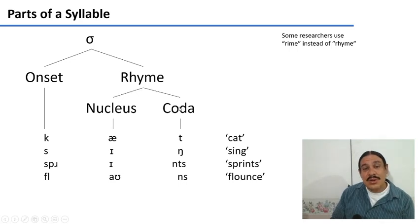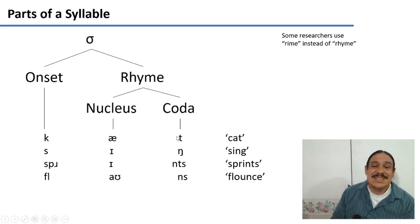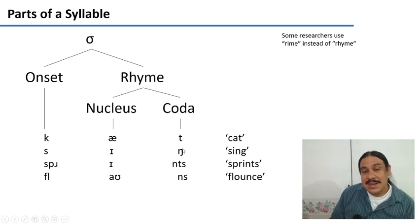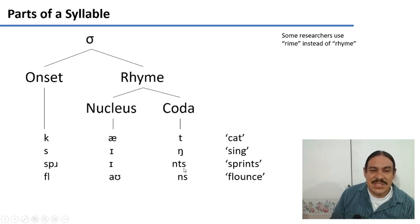So we have the nucleus and then the coda of the syllables would be whatever consonants and glides we have after the nucleus, after the vowel. So in cat, the T would be assigned to the coda. In sing, the ŋ, the nasal velar would be assigned to the coda. In sprints, all of these, the N, T, and S would be in the coda. And in flounce, the N and the S, which come after the nucleus, are assigned to the coda as well.